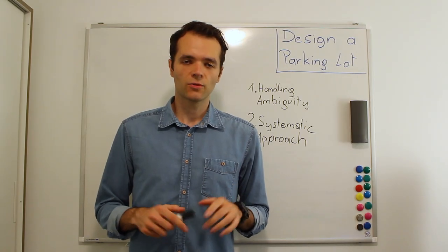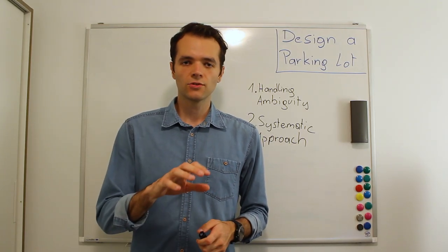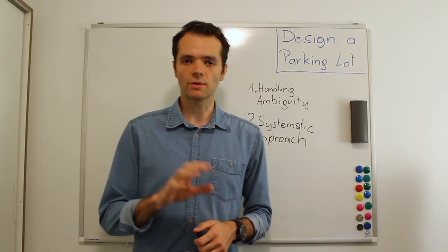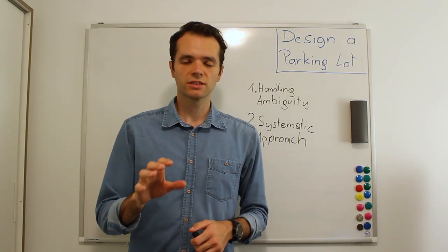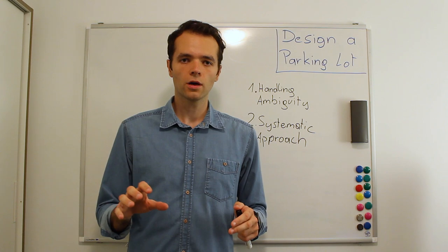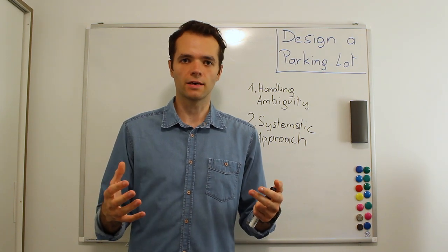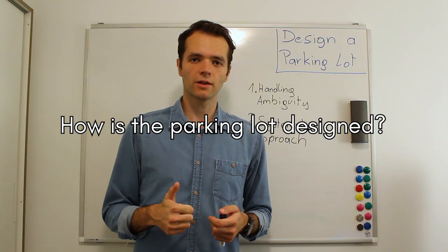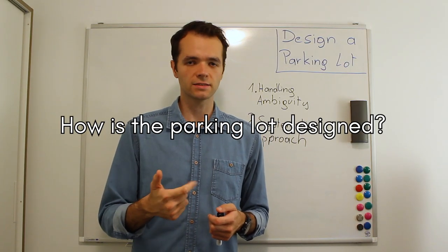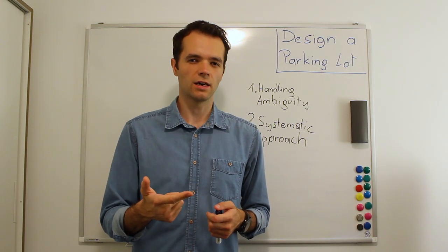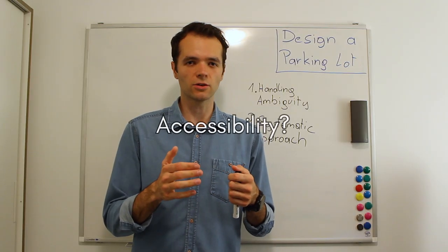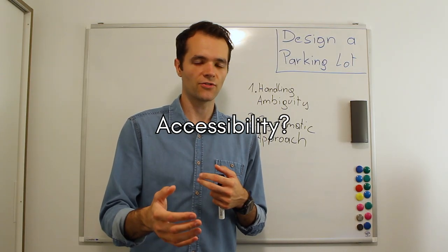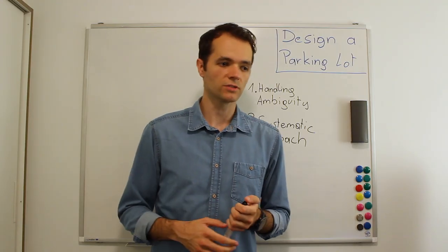What kind of questions could you ask? Without thinking about system design or algorithms, just think about what a parking lot looks like. A first question could be: how is this parking lot designed? Is this a building? Is this an open space? Are some parking spots only accessible if other spots are free?